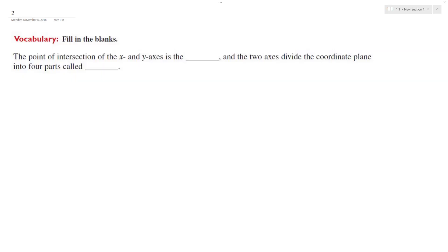We want to fill out this vocabulary term. The point of intersection of the x and y axes - on a graph, the intersection is right here - this is the origin.